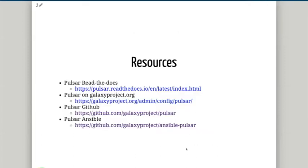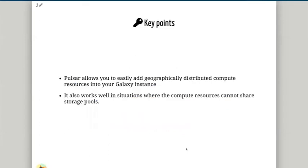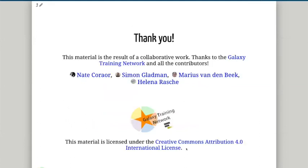There are a lot of resources for Pulsar. There's the Read the Docs site, the actual source code is part of the Galaxy project, and there's an Ansible role for installing Pulsar available as well. In the tutorial, we'll be working through that to install Pulsar on a remote server and get Galaxy to talk to it. The key points to remember are that Pulsar allows you to easily add geographically distributed compute resources into your Galaxy instance, and it works well in situations where compute resources cannot share storage.